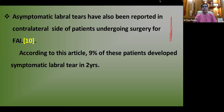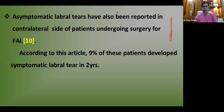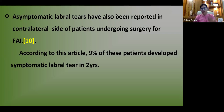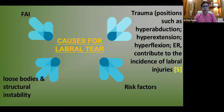Asymptomatic labral tears have been reported on the contralateral side of patients undergoing surgery for FAI. In a study, when the right side was treated for FAI, asymptomatic labral tears were found on the left side. In a follow-up, 9% of these patients developed symptomatic labral tears on that contralateral side within two years.